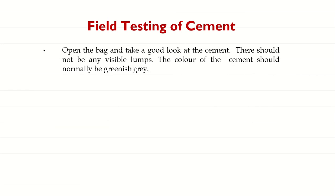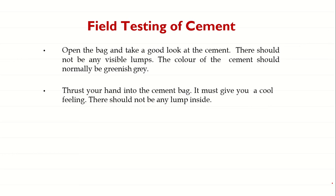The first thing to do in field testing: open the bag of cement and take a good look at it. You should not find any visible nodules or lumps, and the color should be the regular greenish-gray or gray color of cement. There should be no darker or lighter color than normal.